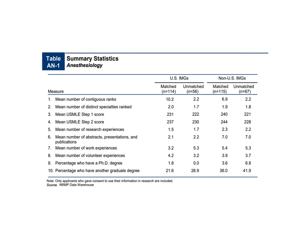For US IMGs, abstracts, presentations, and publications were 2.1 for matched versus 2.2 for unmatched — which tells me that for IMGs, research output is pretty useless. Put all your eggs into crushing USMLE Step 1 if you want to match into anesthesiology. For non-US IMGs who matched: on average 6.9 total ranks, USMLE Step 1 of 240, USMLE Step 2 of 244, and abstracts/presentations/pubs were 7 in both matched and unmatched groups. Research really doesn't matter if you're an IMG — focus entirely on USMLE Step 1 and Step 2.